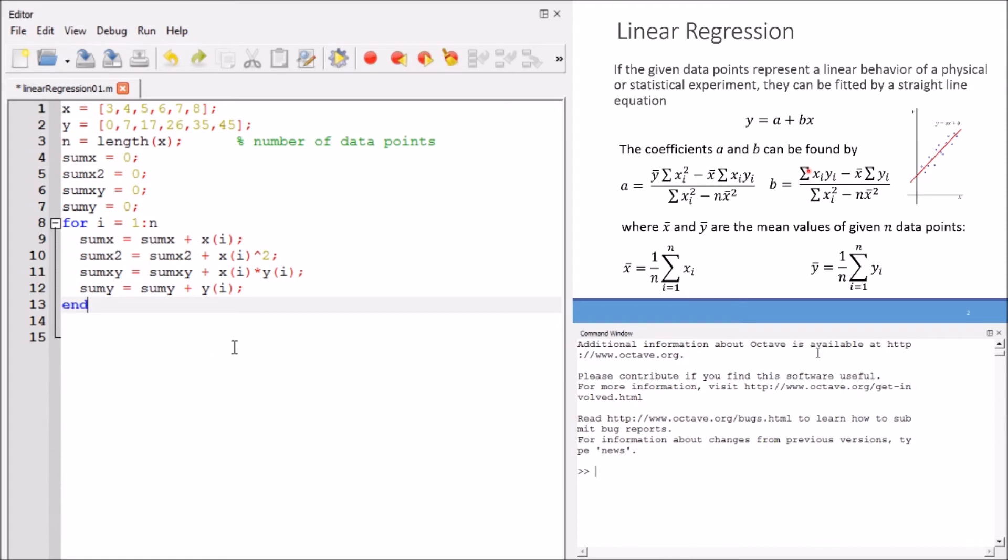Now, we close the loop. At the end of the loop, we'll get the whole required summations to compute the coefficients. We also need the average values. The average x mean is the sum of x values over n. We can get the values of mean values.